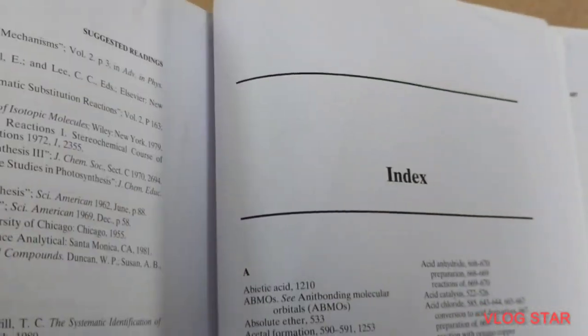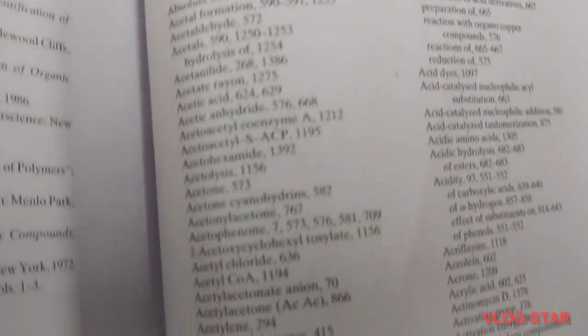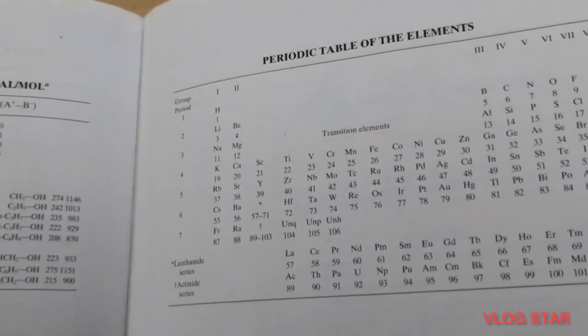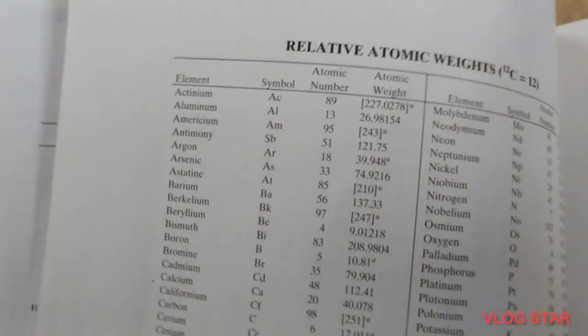Last we have the index in alphabetical order where you can check out. Next as you can see all the structures and the periodic table is also there. All the elements you can check out here. Next we have Relative Atomic Weight.